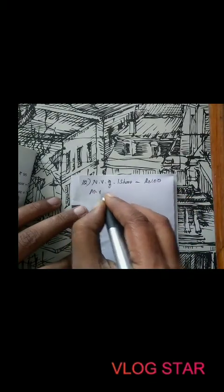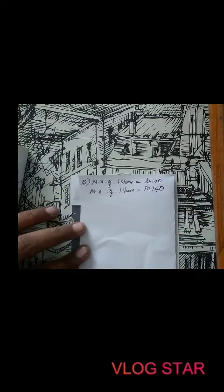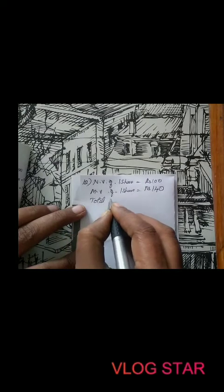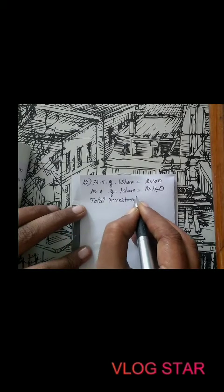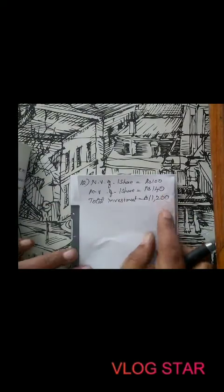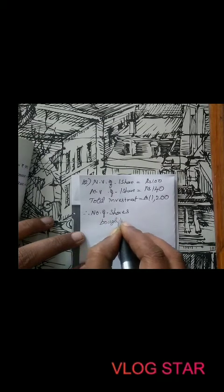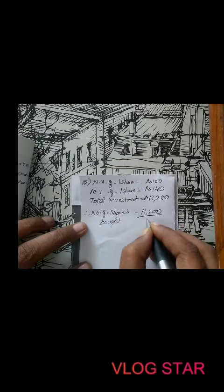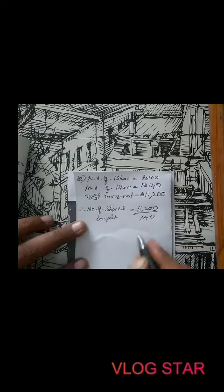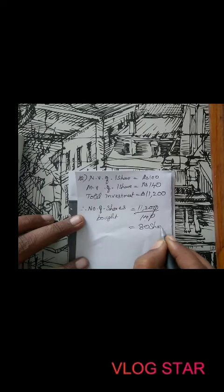Market value of 1 share is rupees 140. Total investment is 11,200. Number of shares bought is 11,200 divided by 140. Cancelling zeros, 14 will go into 112 eight times, giving us 80 shares.